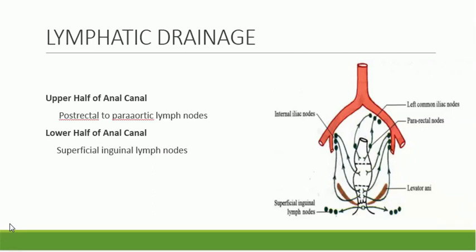Lymphatic drainage: the upper half of the anal canal drains upwards into the post-rectal lymph nodes and then along the inferior mesenteric vessels to the para-aortic lymph nodes. The lower half of the anal canal drains into the superficial inguinal lymph nodes and then into the deep inguinal lymph nodes. This distinction is particularly important when considering cancer of the anal canal.